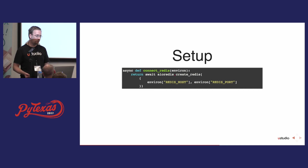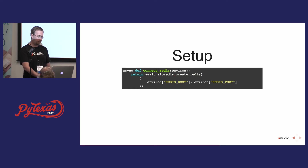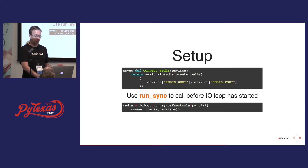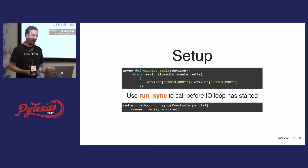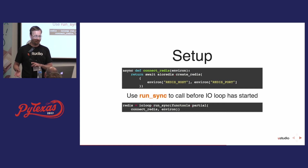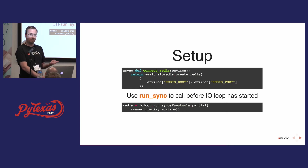Next, we connect to Redis. I have an async function that calls create_redis from AIO Redis, passing the host name and port, and we await that to get the connection object. We need to do this in main before we start the IO loop. One way is to get the Tornado IO loop and call run_sync, using partial to pass in arguments. Alternatively, since we're using AsyncIO, you can get the AsyncIO event loop and call run_until_complete, which has a slightly nicer interface — but since this is a Tornado talk, let's do it the Tornado way.